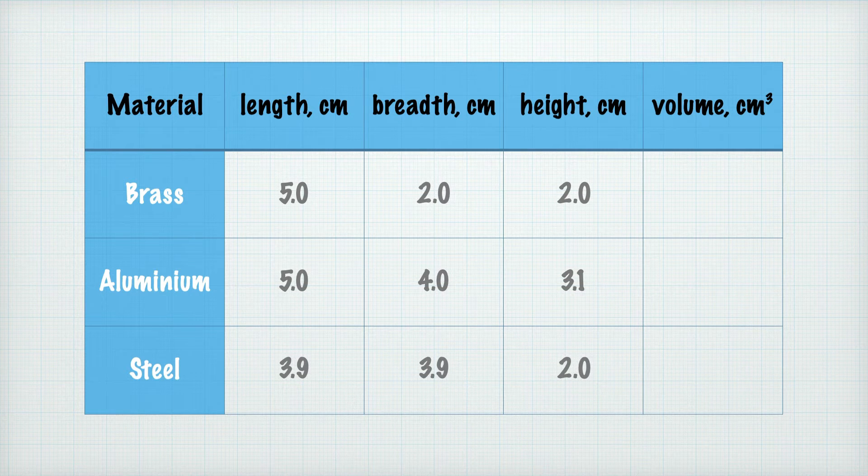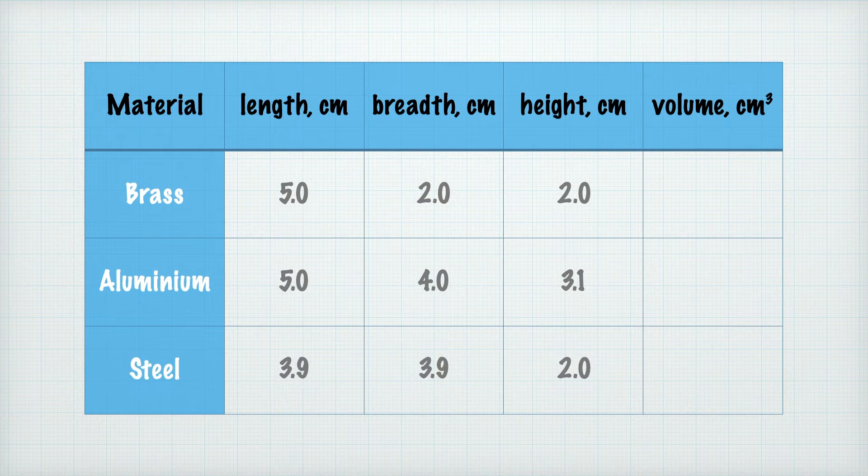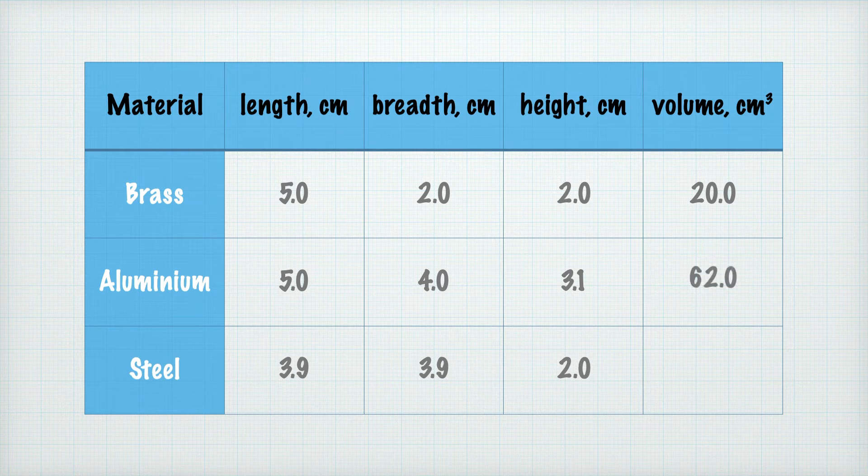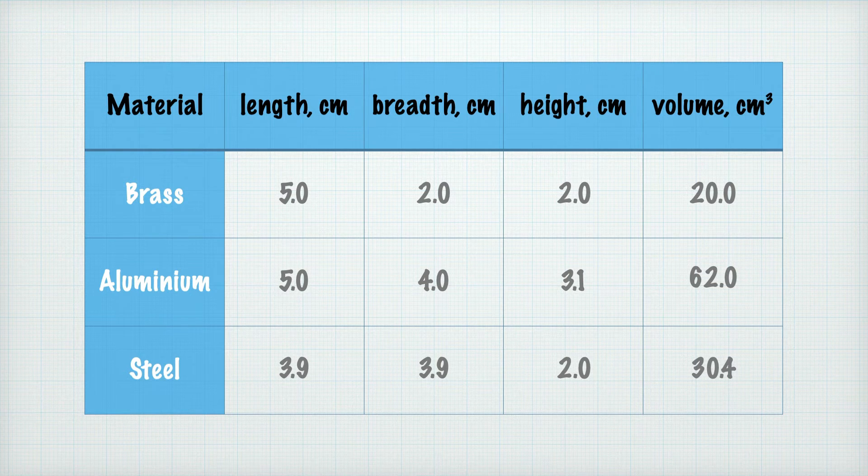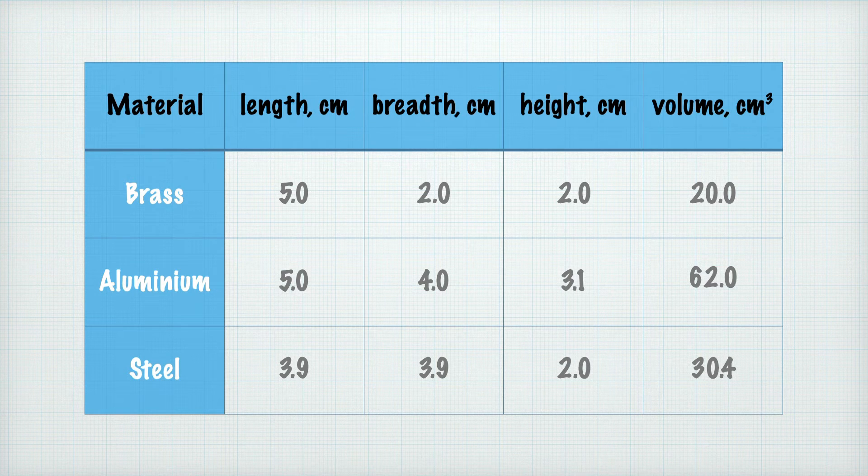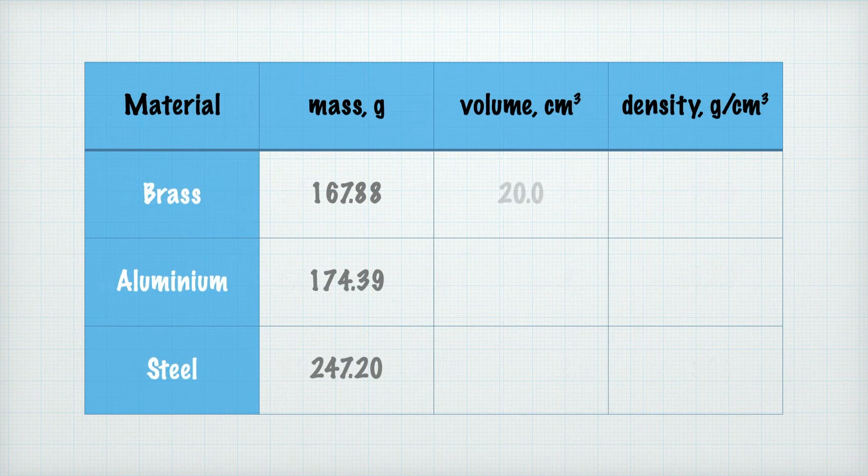As I said before, volume is calculated from multiplying the length times breadth times height which gives us 20.0 for brass, 62.0 for aluminum and 30.4 to one decimal place for steel. Let's pop those values into our first table and we can finally work out the density of our three blocks.